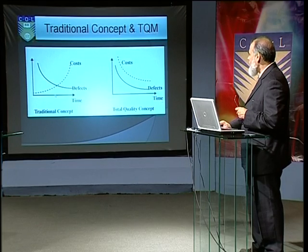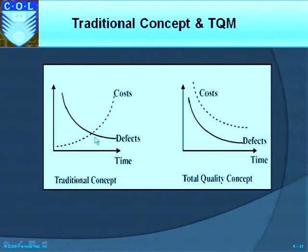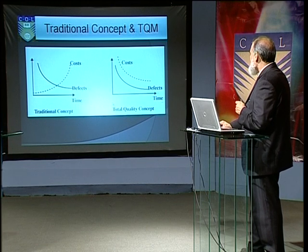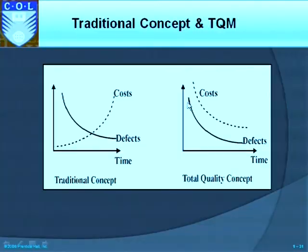The traditional concept of quality says that as you reduce the number of defects, your costs go up — implying that striving for quality costs a fortune. But in the total quality management concept, that is not the case. The TQM quality concept shows that over a period of time, as you decrease the number of defects, your costs also decrease — no rework, no scrap. TQM strives for quality the first time, decreasing costs and improving profitability.